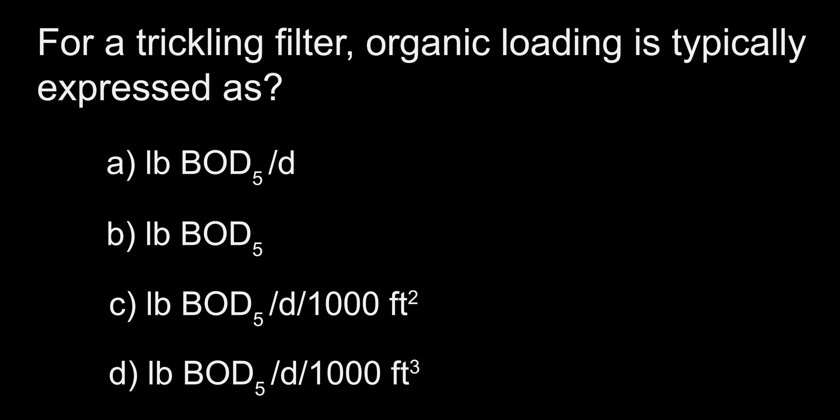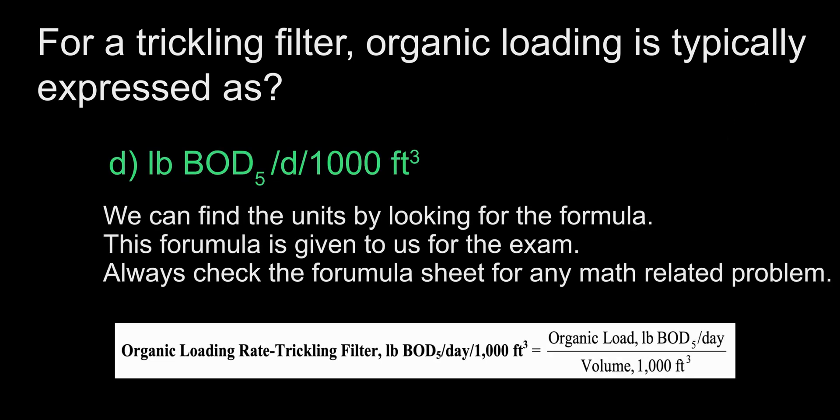For a trickling filter, organic loading is typically expressed as: A. Pounds of BOD per day, B. Pounds of BOD, C. Pounds of BOD per day per 1,000 square feet, D. Pounds of BOD per day per 1,000 cubic feet. The answer is D — pounds of BOD per day per 1,000 cubic feet. The equation for this is given on the exam with the units on it. It is always a good idea to look at the formula sheet before attempting to guess.